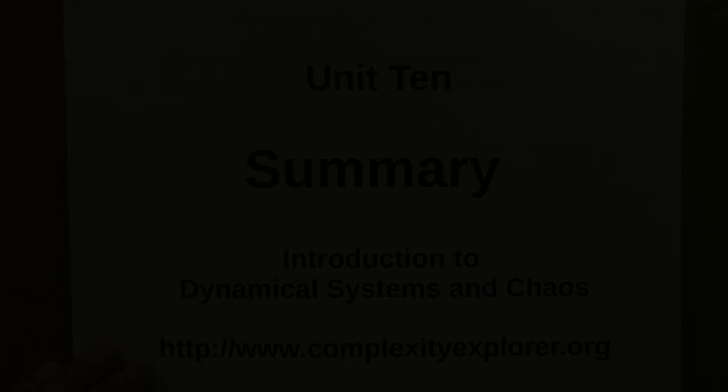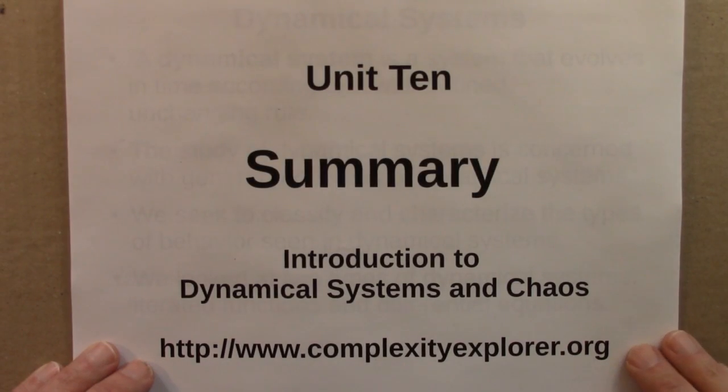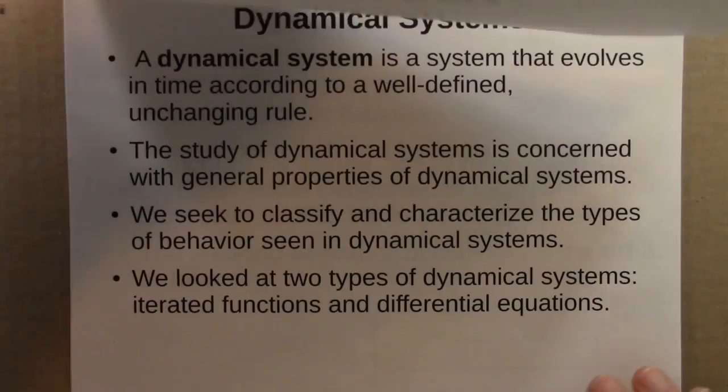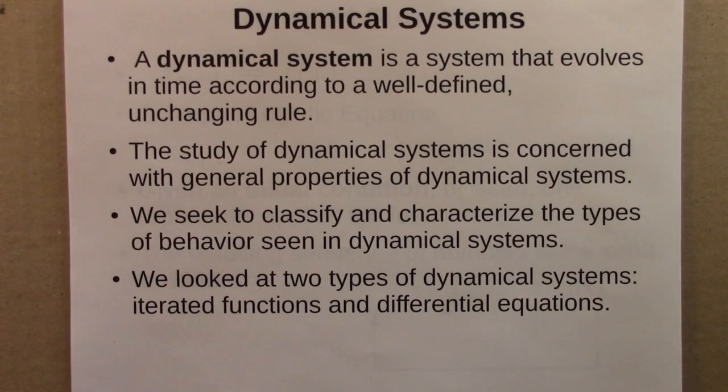So let's get started with a topical overview and summary of what we've done the last nine weeks. This course is about dynamical systems. A dynamical system is a system that evolves in time according to a well-defined, unchanging rule. The study of dynamical systems is concerned with general properties of dynamical systems. We seek to classify and characterize the types of behavior seen in dynamical systems. In this introductory course, we were taking a general view and asking, what can dynamical systems do?